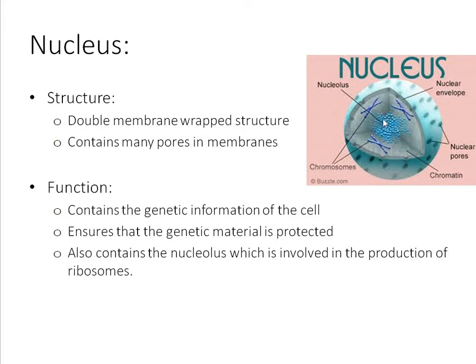Inside the nucleus, we can also see this purple mass called the nucleolus. The nucleolus isn't covered a lot in the VCE study design, but for those looking to understand it, the nucleolus within the centre of the nucleus is involved in the production of ribosomes, which we'll get to further along. Very importantly, the nucleus contains the genetic function of the cell, ensures genetic material is protected, and controls what comes in and out through the nuclear pores.